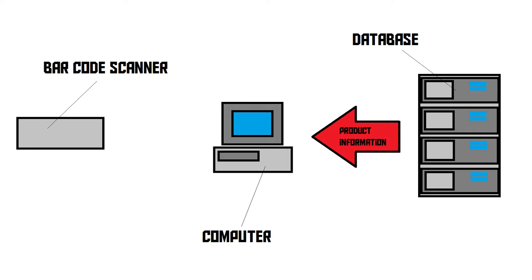In that database is a whole bunch of information — all kinds of specifications about the product, and maybe even an image. The computer will display all of this information on the screen, making it seem as though all of it is stored in that little code on the product. But really, the barcode only stores a relatively short code that points to a certain location in the database, and that's where the product information is actually located.